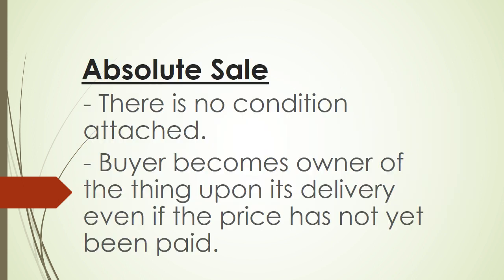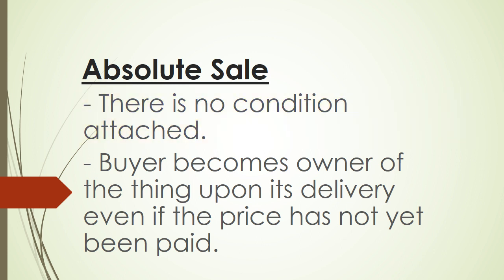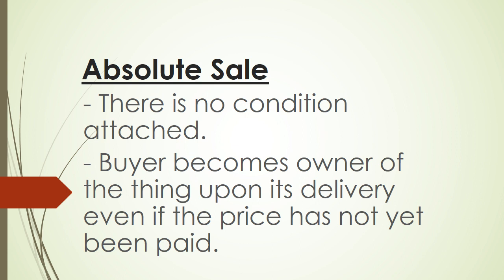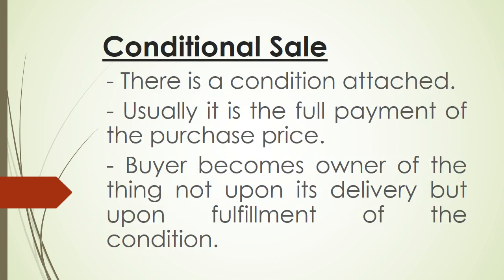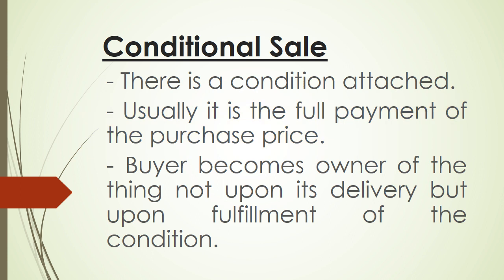Furthermore, under Article 1458, an absolute sale is a sale without condition attached. Here, the buyer becomes owner of the thing upon its delivery even if the buyer has not yet paid the purchase price. On the other hand, a conditional sale is a sale where there is a condition attached, and usually — but not always — that condition is the full payment of the purchase price.